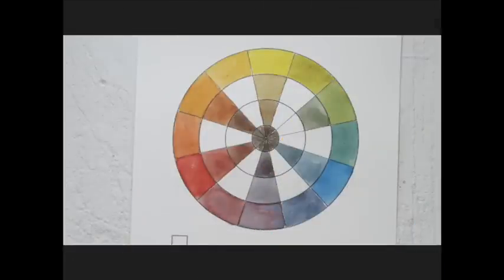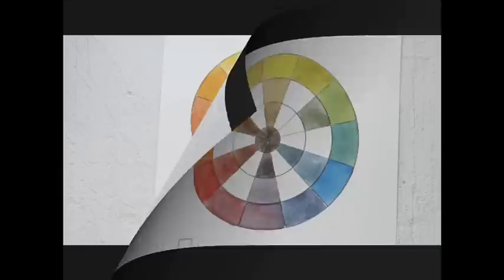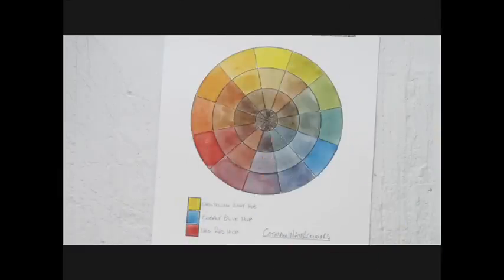When we have done the mid-ranges, the wheel should look like this and then fill it in completely with all the other complements. Finally, just label it up with our three primaries and file it as a reference.